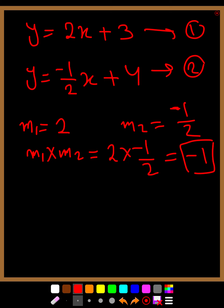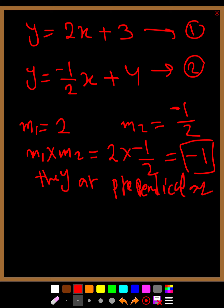So if these two lines are perpendicular and you multiply the two gradients together, the result of the multiplication will be minus one. Meaning they are perpendicular. So we can say two lines are perpendicular when m1 times m2 equals minus one.